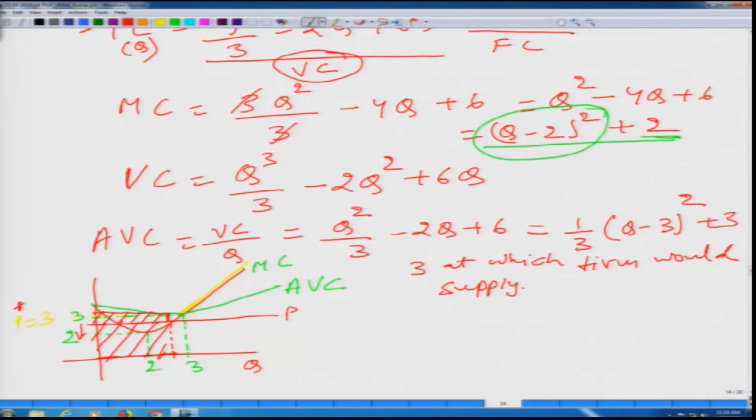So now it is clear. Let us again pay attention to the marginal cost. And what we have said is how did we obtain the supply function in short run? By equating p to marginal cost. So from here we can write p is equal to q minus 2 square plus 2.